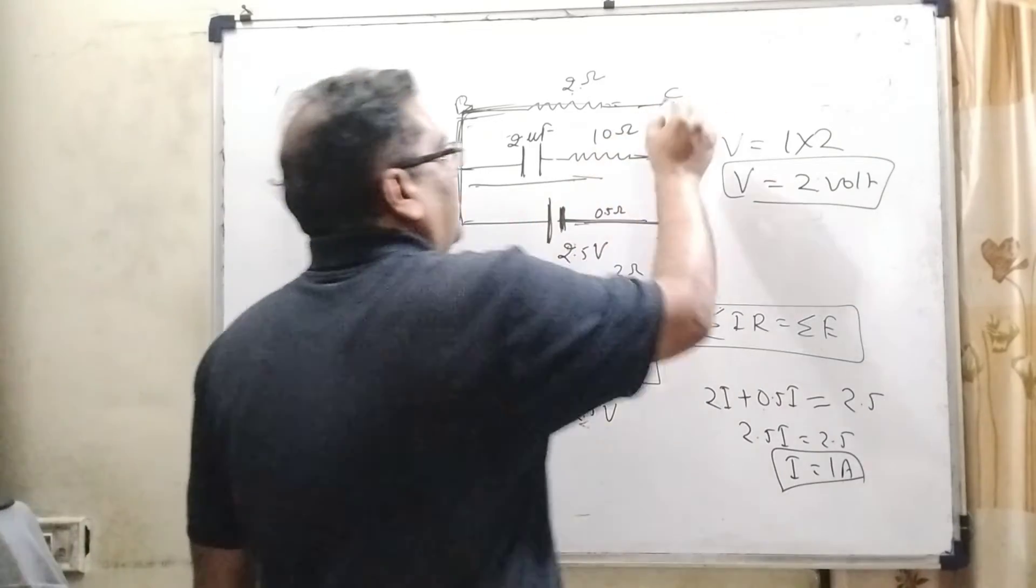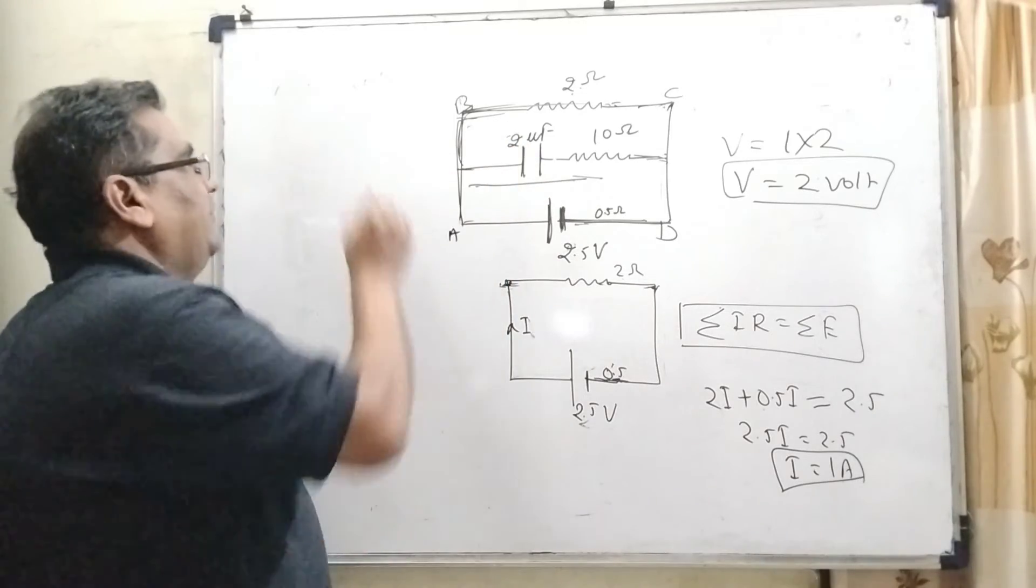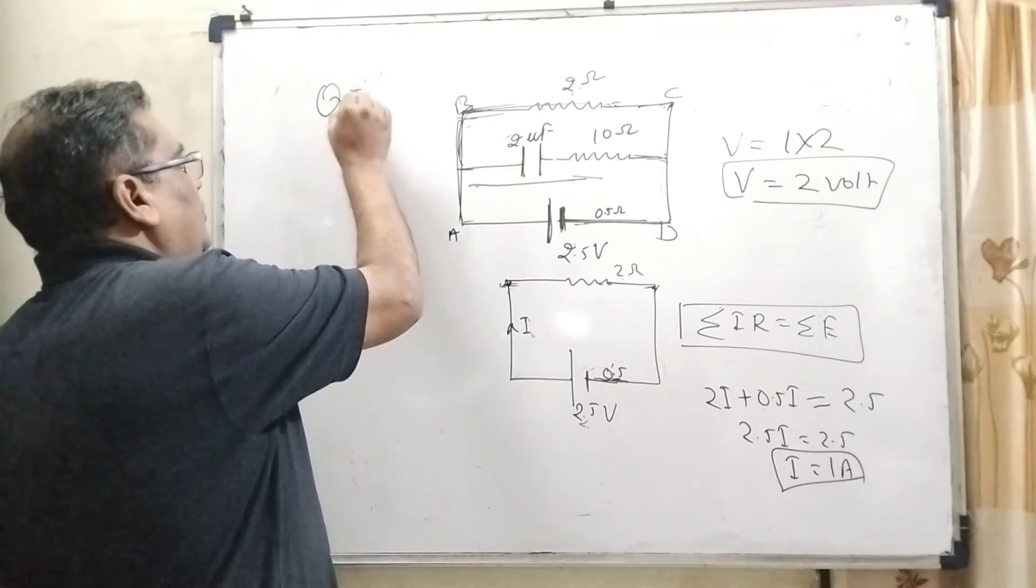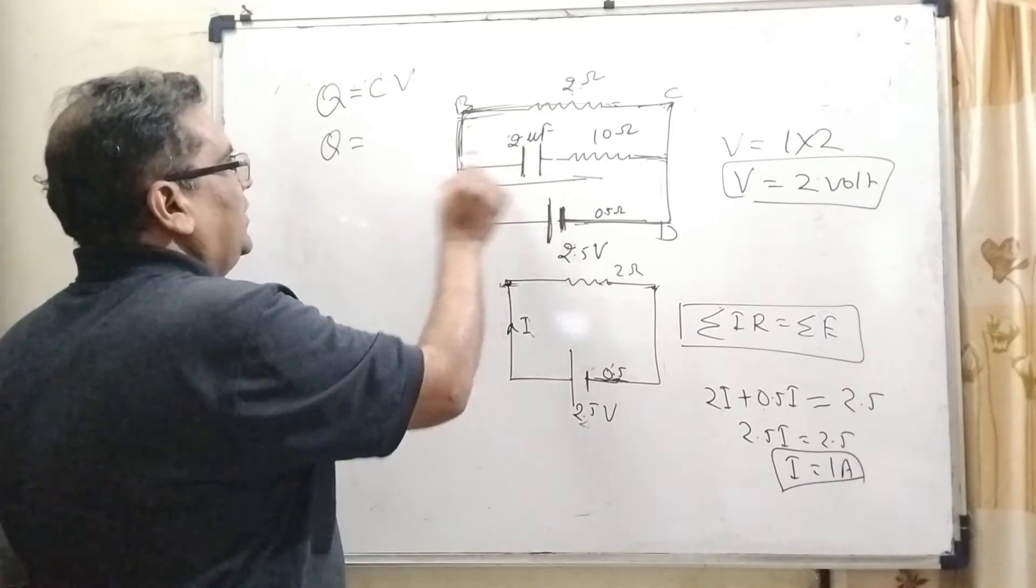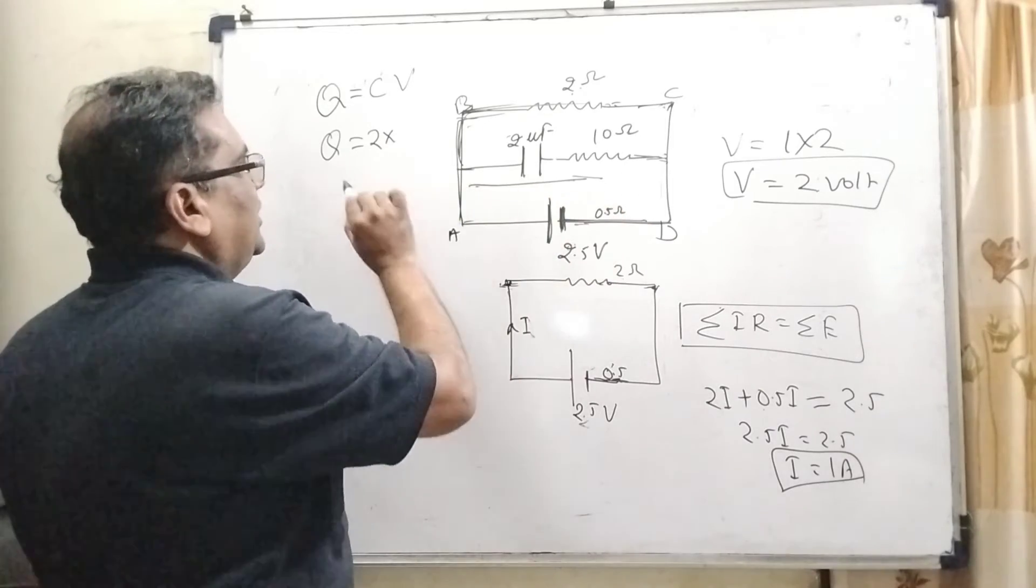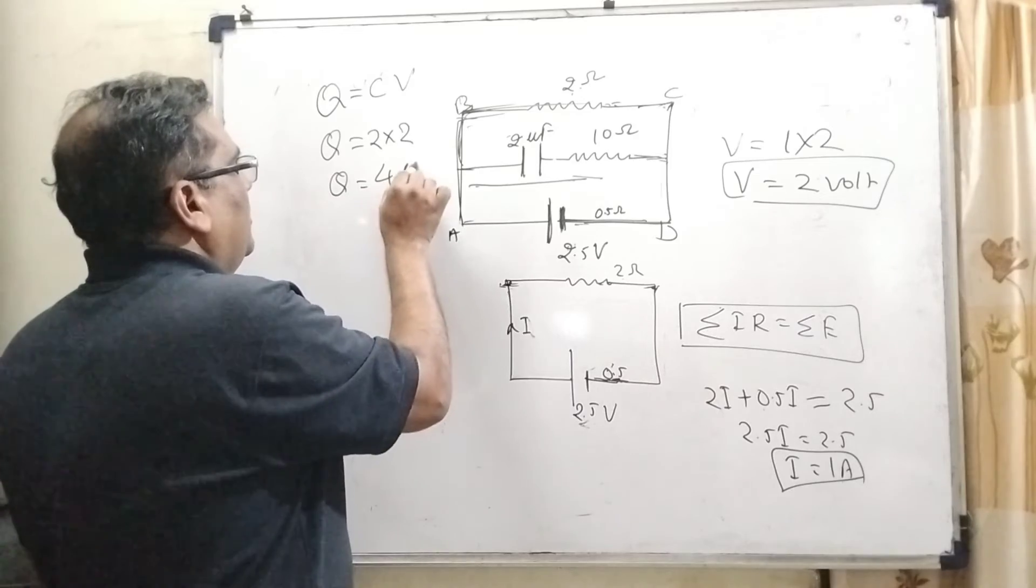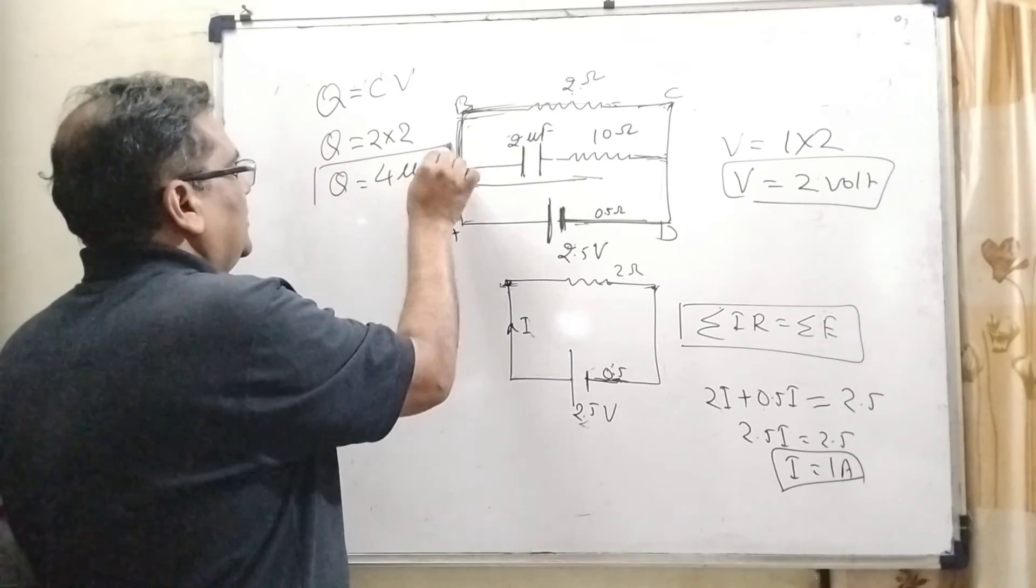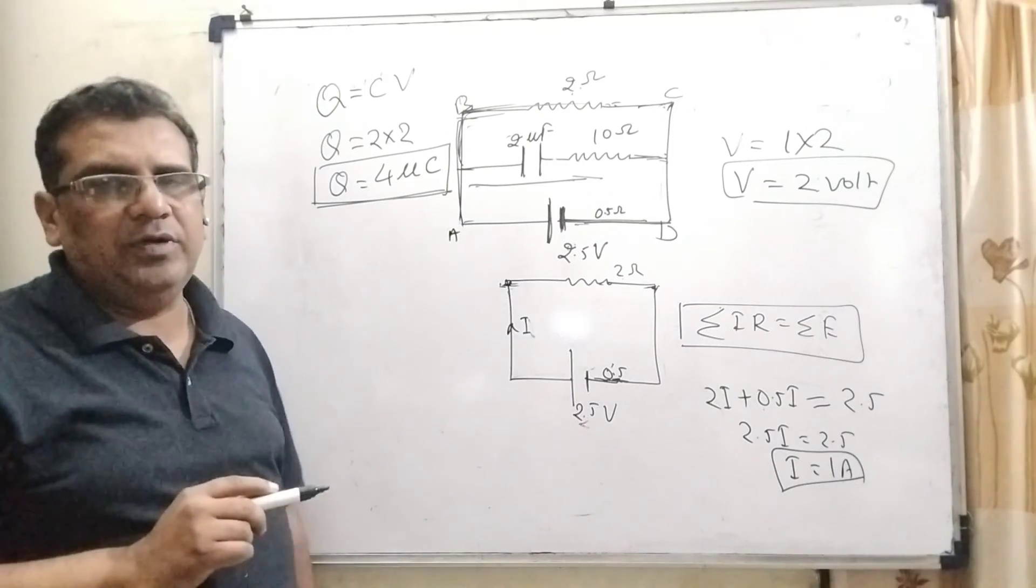Then here we have to find out the amount of charge and we know that the relation is Q equal to CV. Here C is given 2 microfarad and potential is 2. Then Q equal to 2 into 2, that is 4 micro coulomb. Is it okay? Here is the correct answer and I hope you understood this question.